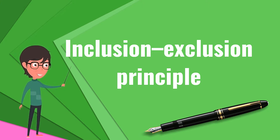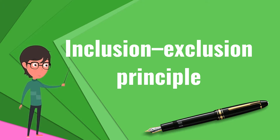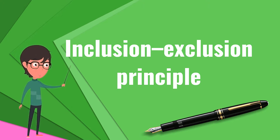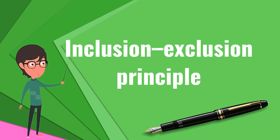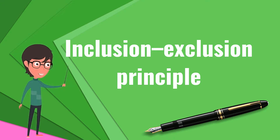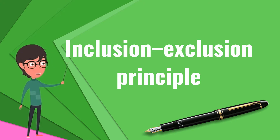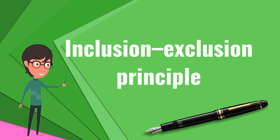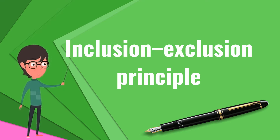The principle is more clearly seen in the case of three sets, which for the sets A, B, and C is given by: |A ∪ B ∪ C| = |A| + |B| + |C| - |A ∩ B| - |A ∩ C| - |B ∩ C| + |A ∩ B ∩ C|. This formula can be verified by counting how many times each region in the Venn diagram figure is included in the right-hand side of the formula. When removing the contributions of over-counted elements, the number of elements in the mutual intersection of the three sets has been subtracted too often, so it must be added back in to get the correct total.